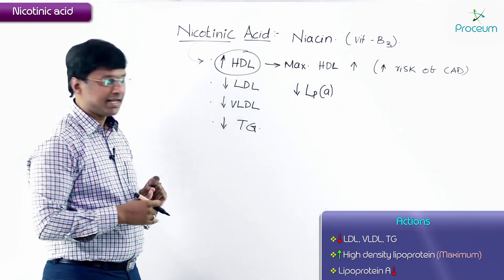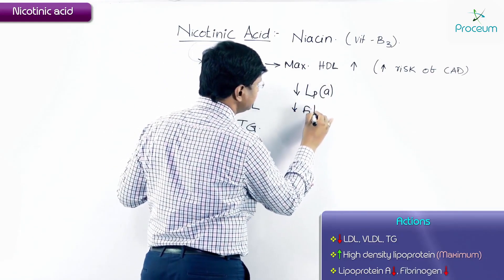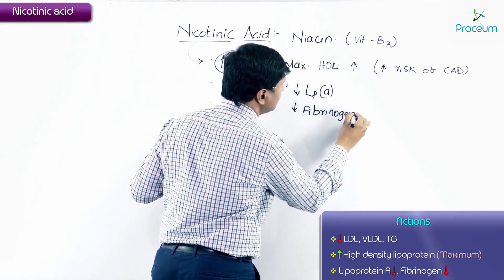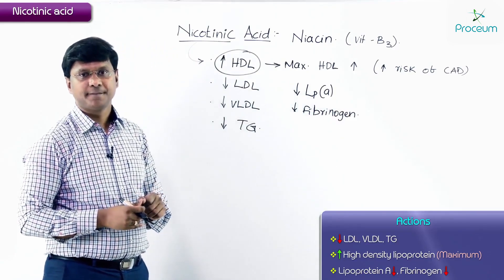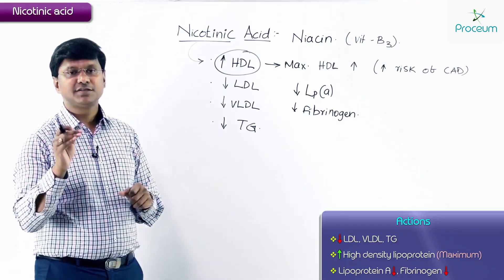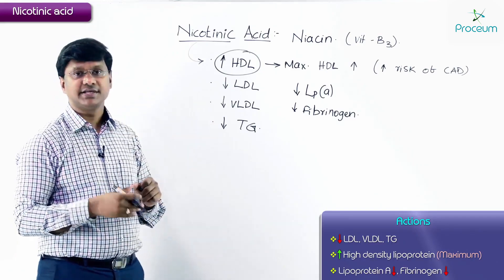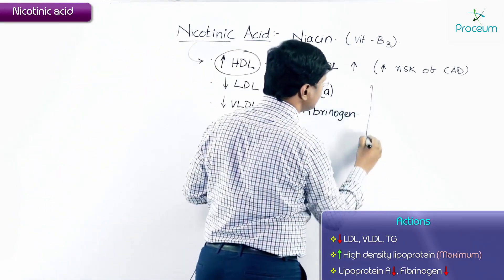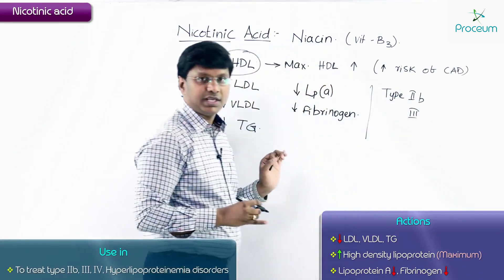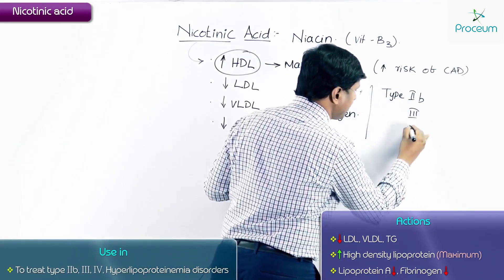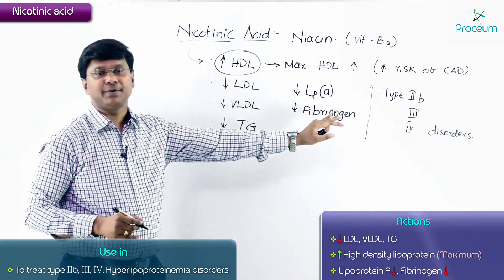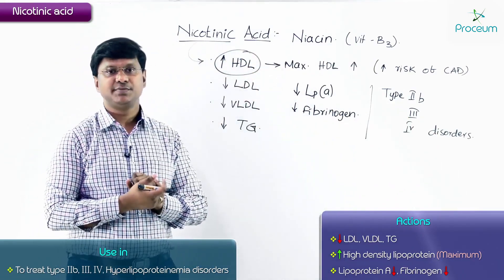Not only that, niacin can also decrease lipoprotein A levels and will also decrease fibrinogen. In terms of primary hyperlipoproteinemias, niacin or nicotinic acid is used in type 2b, type 3, and type 4 disorders.